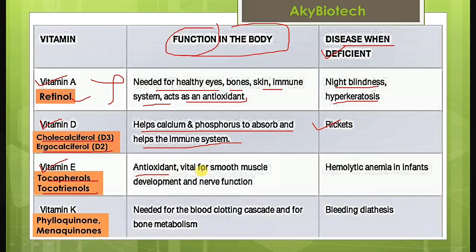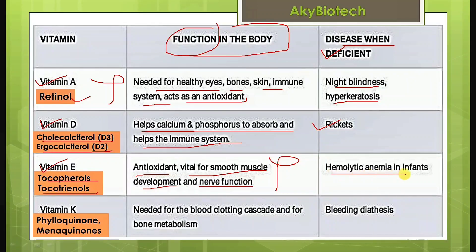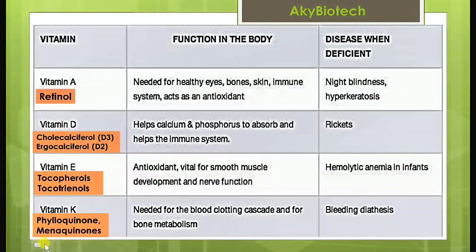Vitamin E — this is known as tocopherols or tocotrienols. Its function in the body is that it acts as an antioxidant, and is vital for smooth muscle development and nerve function. Deficiency of vitamin E leads to hemolytic anemia in infants.